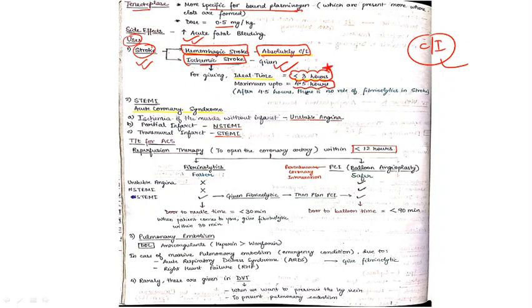The second indication is ST elevated myocardial infarction. You can give this in ischemia of the muscle, in STEMI or non-ST elevation MI.